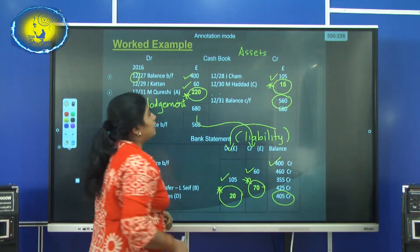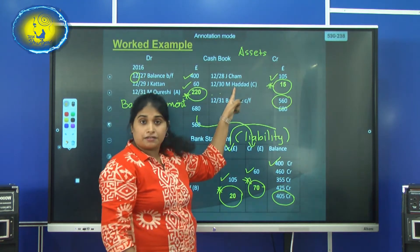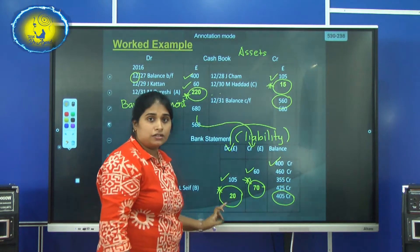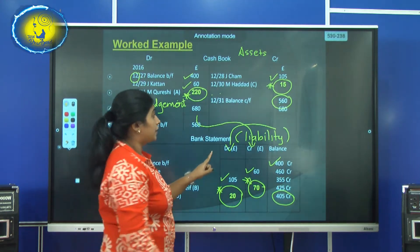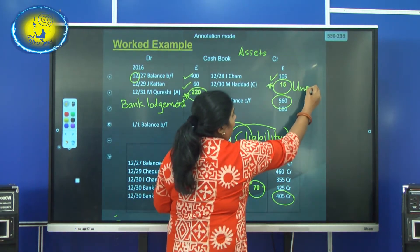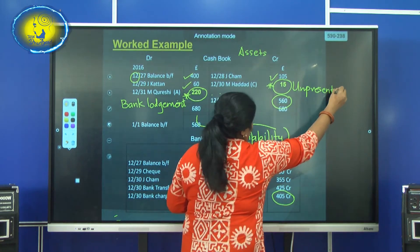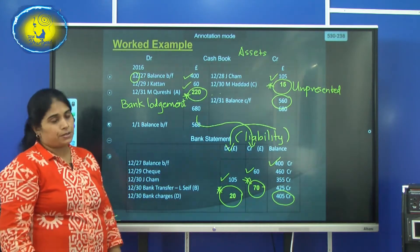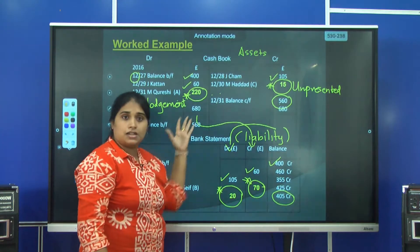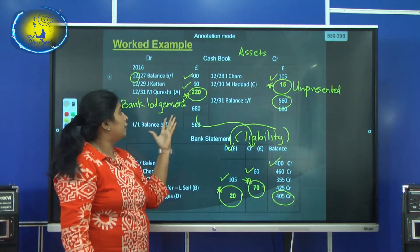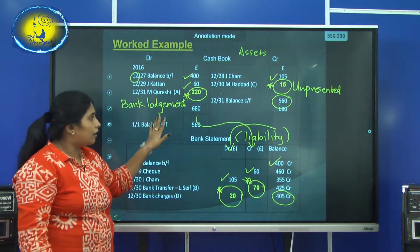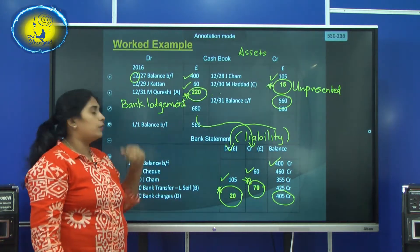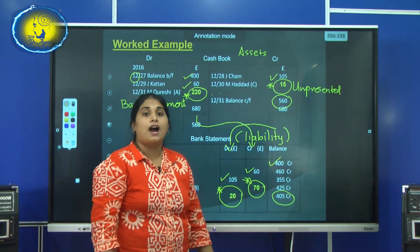Now looking at the credit side: M. Haddad — we have issued a cheque for a person called M. Haddad but he has not presented it to the bank. We call this an unpresented cheque — a cheque that has been issued but not presented to the bank. Always remember: bank lodgement and unpresented cheques will be found in the cash book. The debit one is a bank lodgement; the credit one is an unpresented cheque.